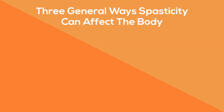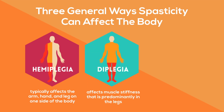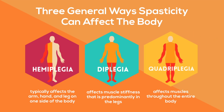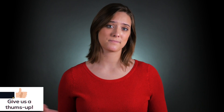Hemiplegia, which typically affects the arm, hand, and leg on one side of the body. Diplegia, which affects muscle stiffness that is predominantly in the legs. And quadriplegia, which affects muscles throughout the entire body. Some may only have a few tense muscles, making it difficult or painful to walk normally, while others may not be able to walk at all.